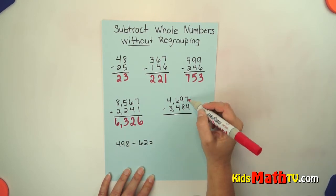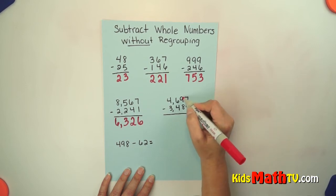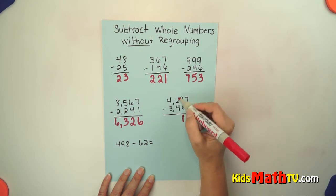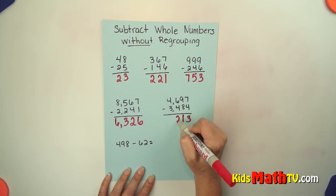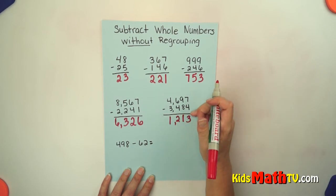One more example. Starting in the ones. 7 minus 4 is 3. 9 minus 8 is 1. 6 minus 4 is 2. 4 minus 3 is 1. So that's when they're written this way.